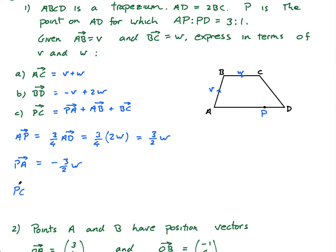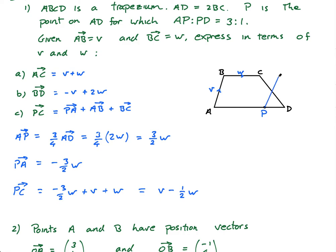So PC equals PA plus AB plus BC, which is minus three-halves w, plus v, plus w. Simplifying: minus three-halves w plus 1w gives minus one-half w. Putting v first, PC equals v minus one-half w. And just looking at it — going up v and then back half of w — that makes sense geometrically.